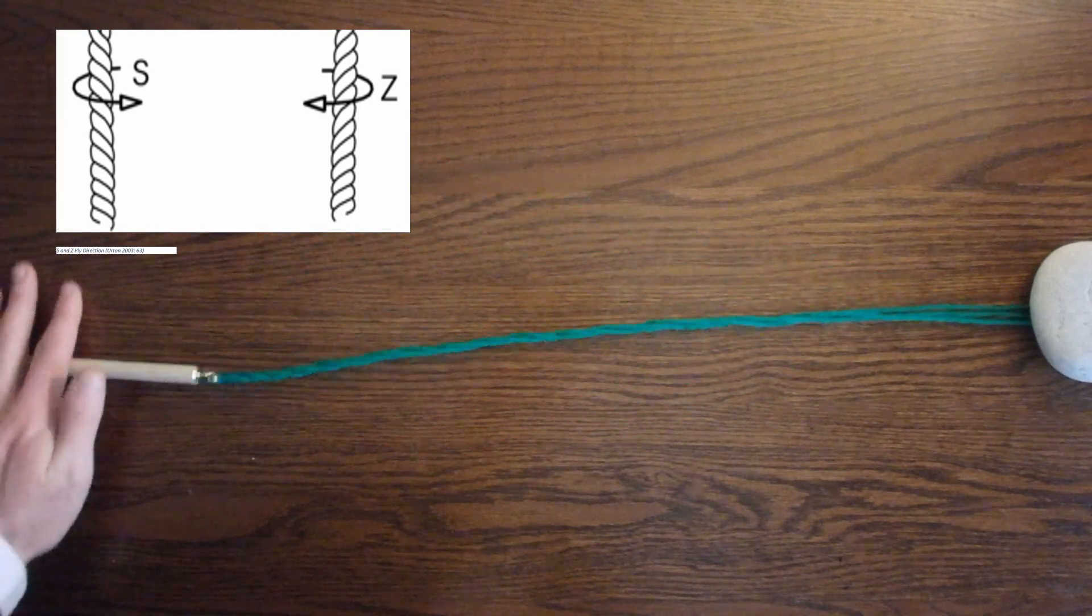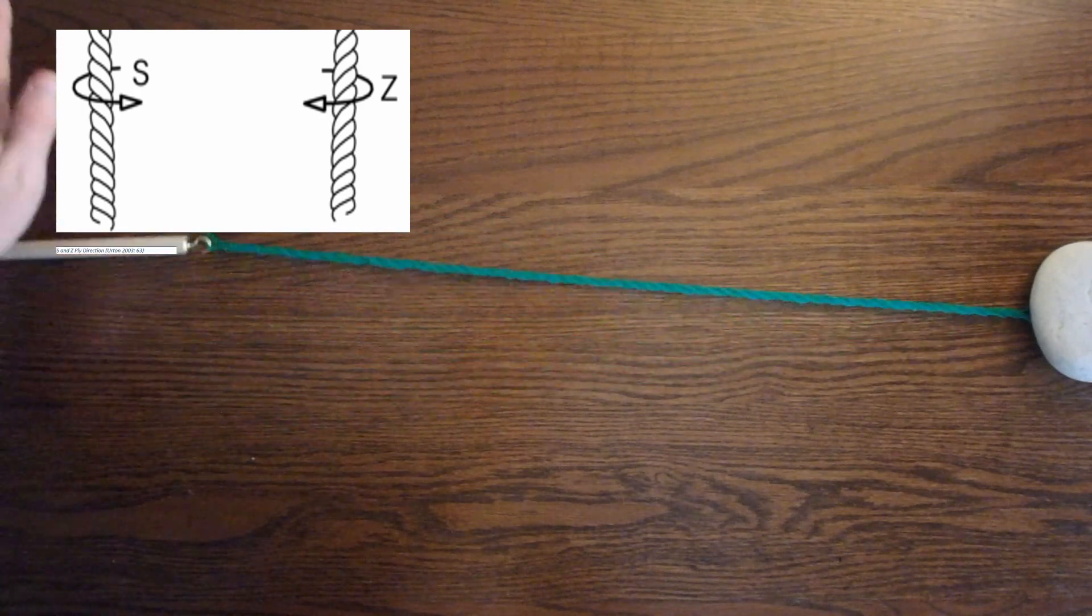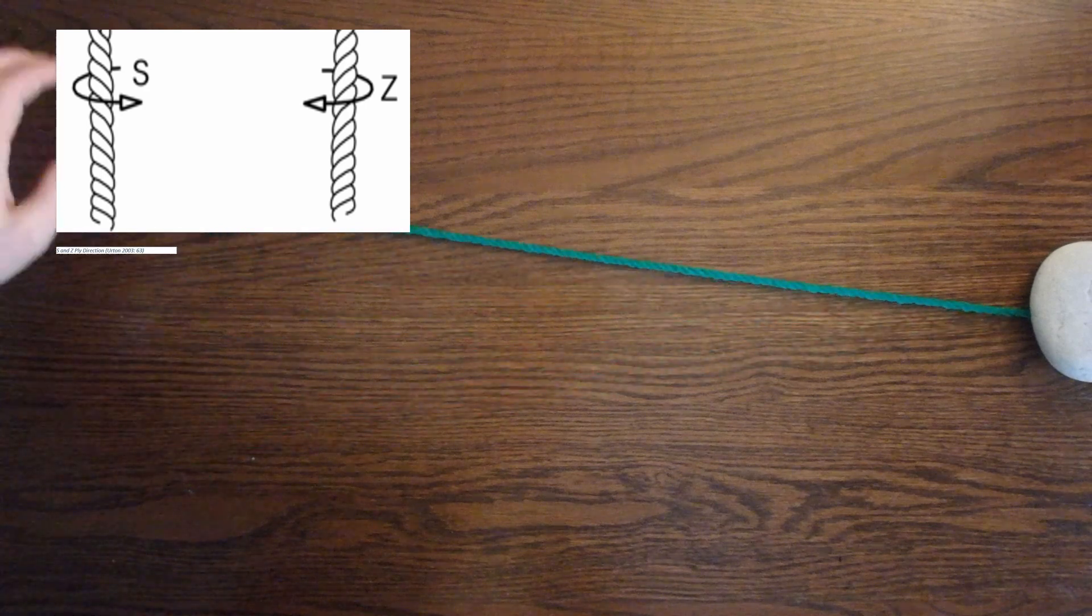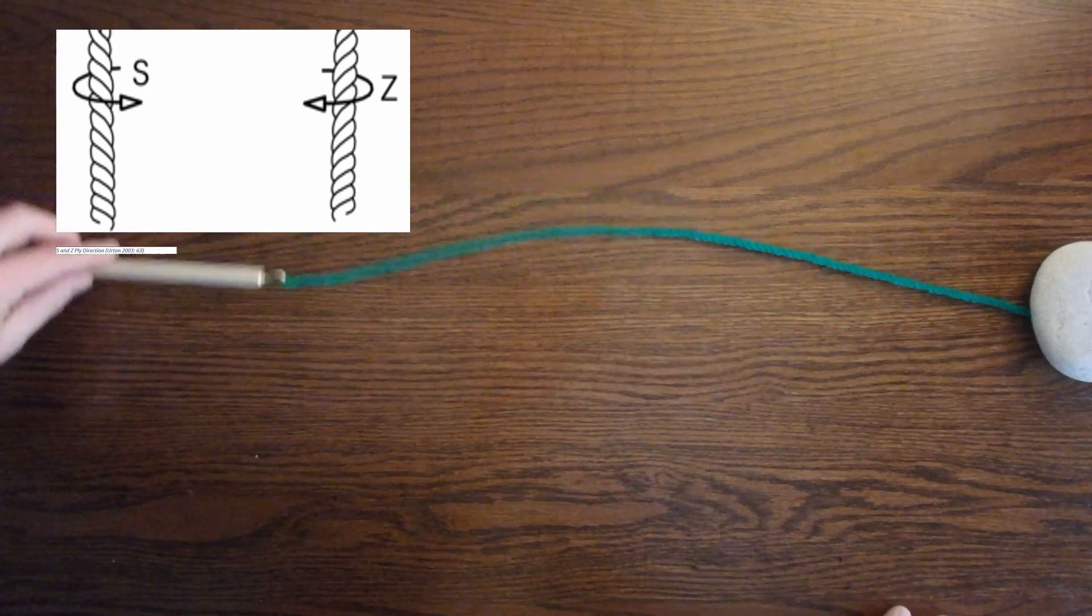You can either build up tension by rolling your spindle in a counterclockwise direction like this, resulting in an S-ply chord, or in the clockwise direction, resulting in a Z-ply chord. I'll make this primary chord an S-ply chord.